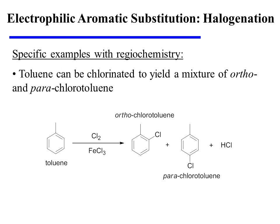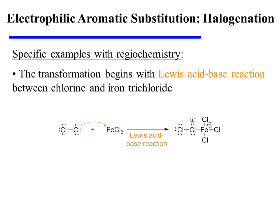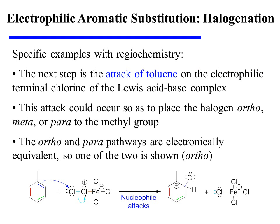Let's now turn our attention to some specific examples with regiochemical considerations. Toluene can be chlorinated to yield a mixture of the ortho- and para-substituted products. The transformation begins with a Lewis acid-base reaction between chlorine and iron trichloride, which forms a Lewis acid-base complex. The next step is the attack of toluene on the electrophilic terminal chlorine of that Lewis acid-base complex.